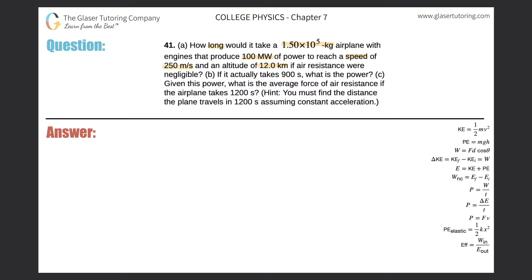Let's think about the general gist of what we're given here. We're given a power in megawatts. They're also telling us speeds and heights, so that sounds like kinetic and potential energy. They're asking us how long something is taking place. So I'm trying to relate energy, power, and time using the equation on the right.